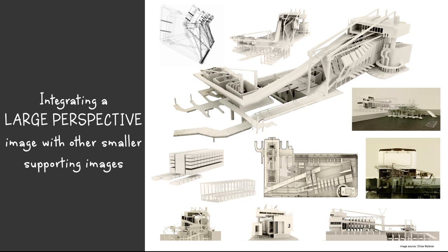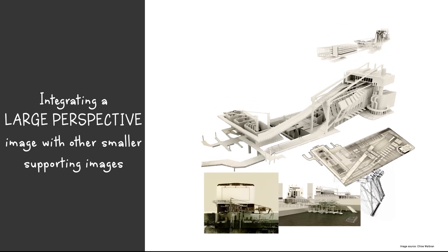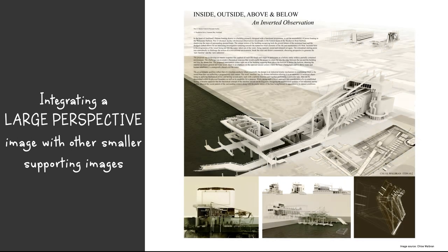Let's look at how students from our school have integrated a large perspective with other smaller supporting images. The image by Interior Architecture student Chloe Walbrand places her large perspective to the right of the composition, at the one-third position, at an angle that leads the eye naturally to the left, as well as from light to dark. She has located and shaded the plan to make it look as if it is slightly pressed down into the page. In this way, the plan reads as if it might be a footprint left behind by the building that once stood there, but that later moved to its current site.